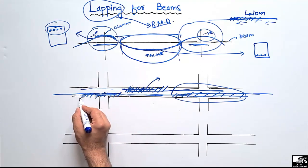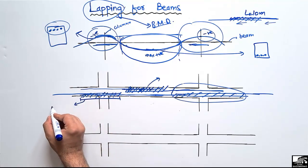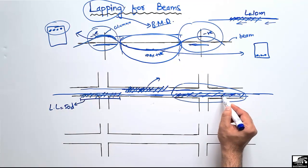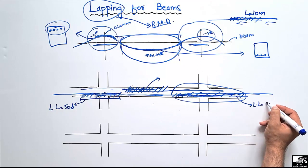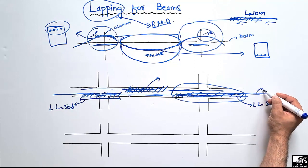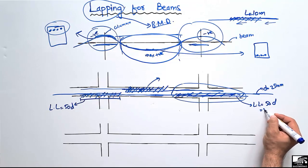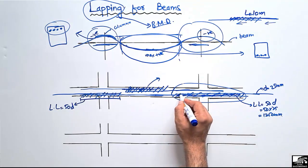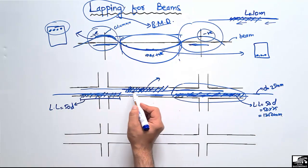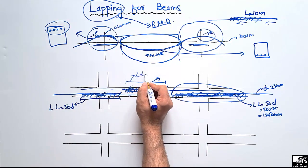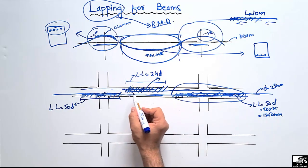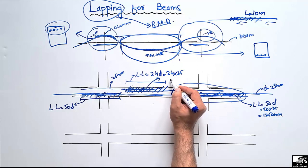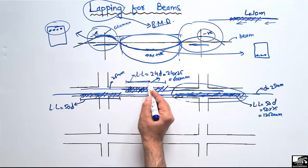The lapping length for bottom reinforcement is equal to 50 × D, where D is the diameter of the bar. For top reinforcement, the lapping length is equal to 24 × D. For example, if the bar diameter is 25 mm: bottom lapping length = 50 × 25 = 1250 mm, and top lapping length = 24 × 25 = 600 mm.